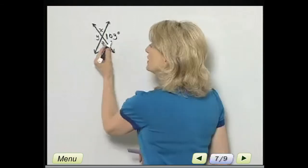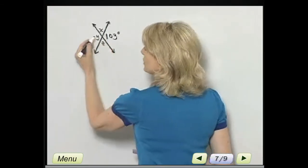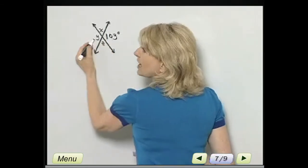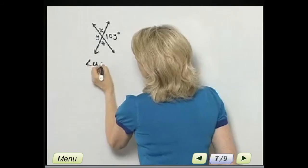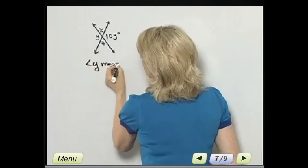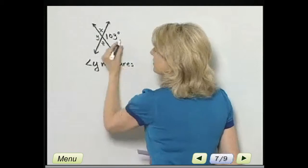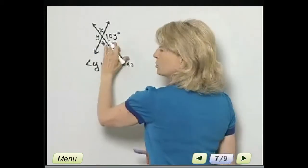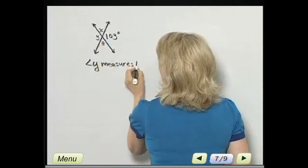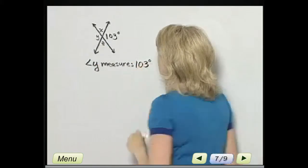Let's find the measures of these other angles. If this is 103 degrees, what is the measure of angle Y? Angle Y measures the same. It is a vertical angle with angle A. So angle Y measures 103 degrees.